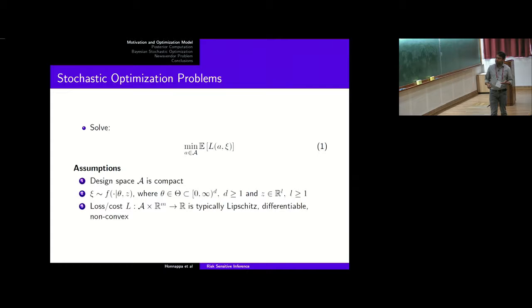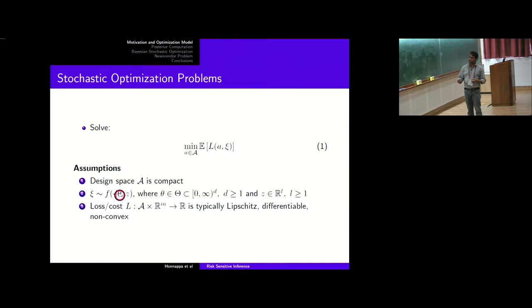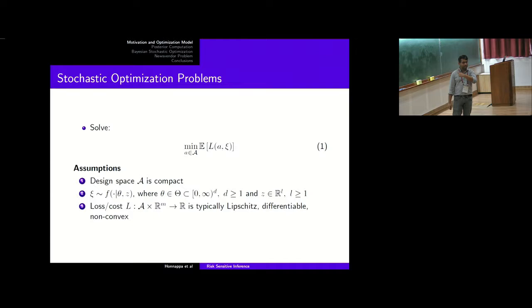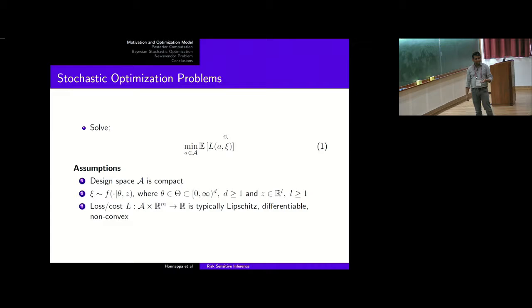The type of problem we wanted to solve is a stochastic optimization problem where L is a loss function — typically Lipschitz, differentiable, and possibly non-convex. Psi is the random object, assumed to have a density function parameterized by some theta, with possible local covariates z. The design space or action space is assumed to be compact. If you knew the distribution completely, this would be a deterministic optimization problem — you'd stick it into a deterministic optimization package and you'd be done.